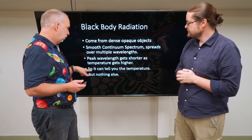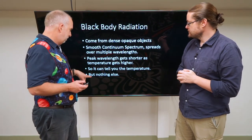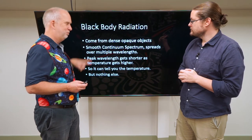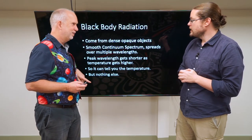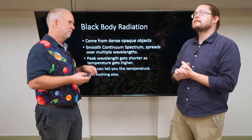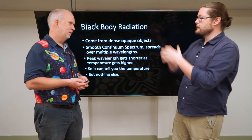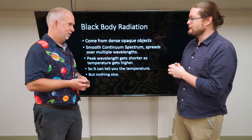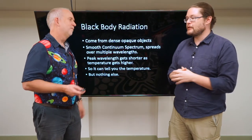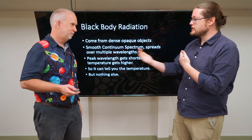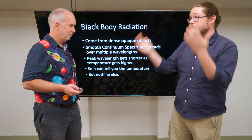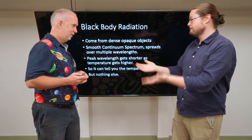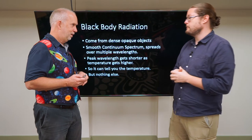So the spectrum can tell you the temperature, but only that it's dense and opaque — nothing else. If you take a radio telescope and look at an object that is emitting mainly at radio wavelengths, you can infer roughly that it has a colder temperature. So the peak wavelength is a thermometer of sorts for any dense, opaque, thermally equilibrated source.